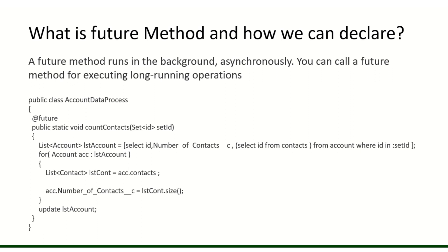Now, what is the future method and how can we declare it? A future method means if you declare a method as future, it will run in the background asynchronously. You can call a future method for executing long-running processes — for example, callouts, fetching data, or avoiding mixed DML operations. To declare it, you place the @future annotation above your method, and the method must be static and void, accepting only primitive data type parameters.